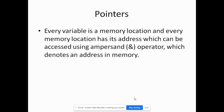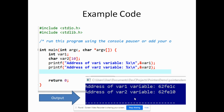Pointers. Every variable is a memory location, and every memory location has its address which can be accessed using the ampersand operator, which denotes an address in memory. In this example code, we declared two variables: one is an integer variable and another is a character array. The printf statement uses ampersand var1 and ampersand var2. The output shows the address of var1 and the address of var2.